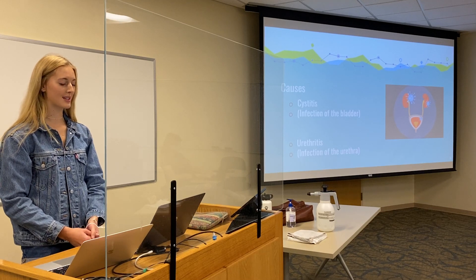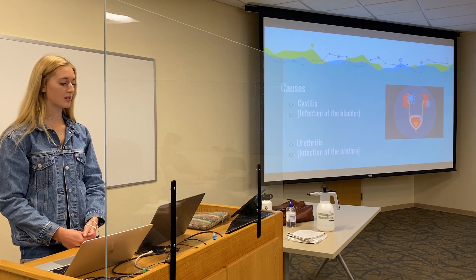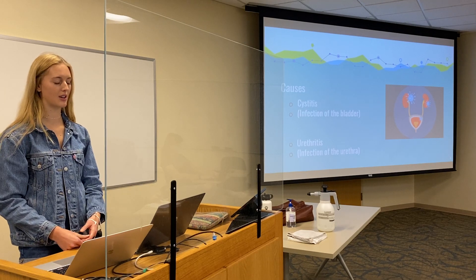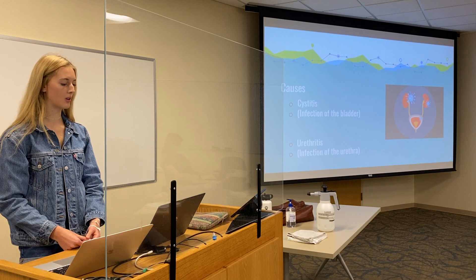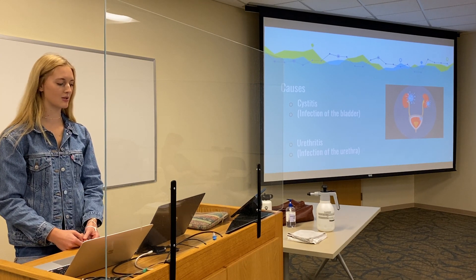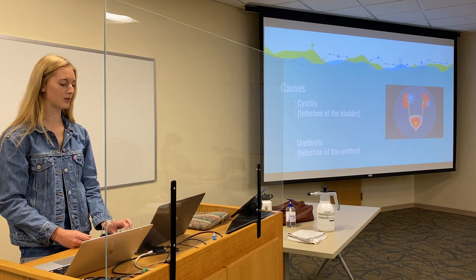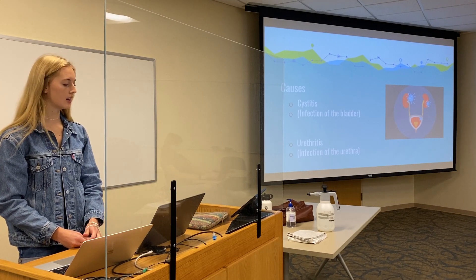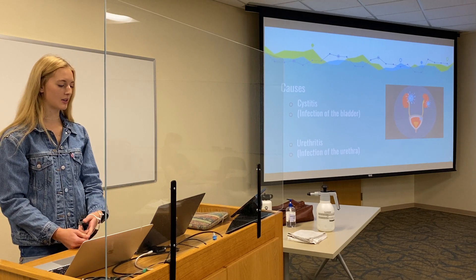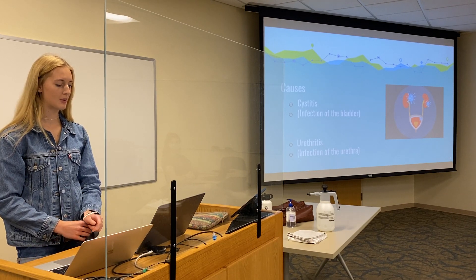UTIs usually occur when bacteria enter the urinary tract and begin to multiply in the bladder, which can lead to severe infections. They are more common in women and will usually either affect the bladder, known as cystitis, or infect the urethra, known as urethritis. Cystitis is caused by E. coli, a type of bacteria found in the GI tract. All women are susceptible because anatomically women have a shorter distance from the urethra to the anus and the urethral opening to the bladder, and sexual intercourse may also lead to cystitis. Urethritis occurs when GI bacteria spread from the anus to the urethra, and because the female urethra is close to the vagina, sexually transmitted infections such as herpes, gonorrhea, chlamydia, and mycoplasma can cause urethritis.